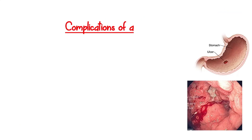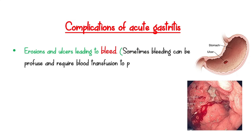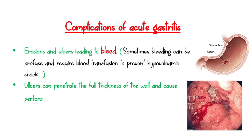Complications of acute gastritis include erosions and ulcers leading to bleeding. Sometimes bleeding can be profuse and require blood transfusion to prevent hypovolemic shock. Ulcers can penetrate the full thickness of the wall and cause perforations, giving rise to peritonitis and internal bleeding.